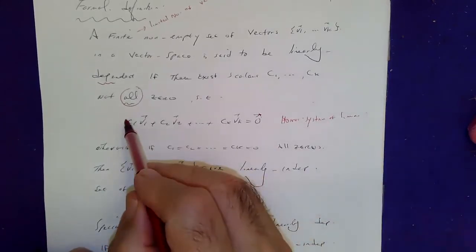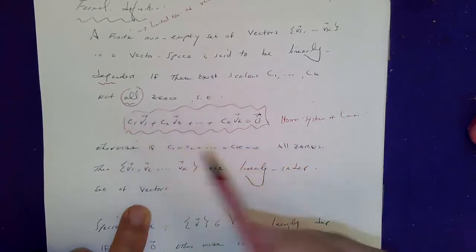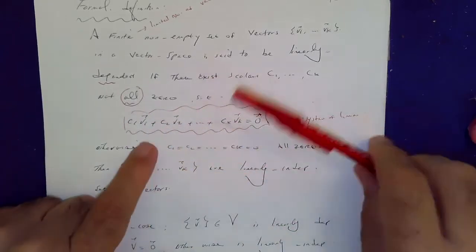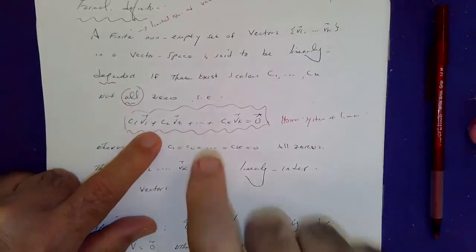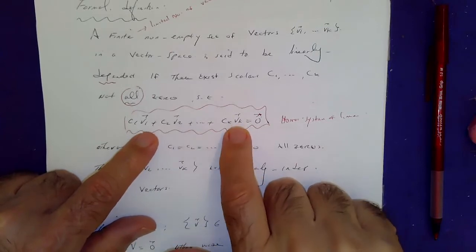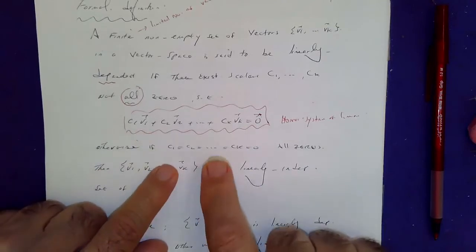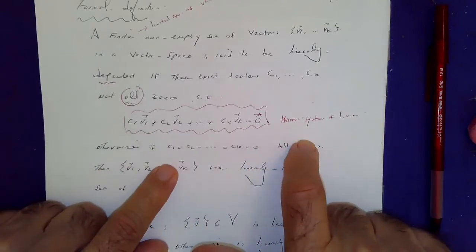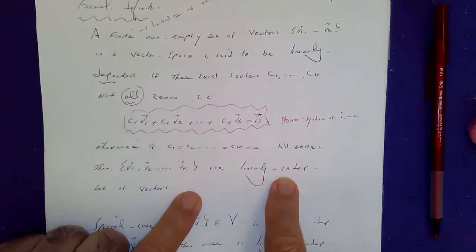First we got to form this homogeneous system of linear equation. And the unknowns will be C1, C2, all the way depending on how many vectors you got. If the solution happens to be trivial, meaning zero, zero, zero is your only solution, then the vectors are said to be linearly independent.